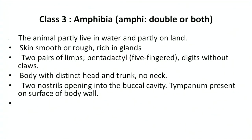The third class is Amphibia — 'amphi' means double or both, and 'bios' means life — as they live on land as well as in water, like frogs. The animals partly live in water and partly on land. Skin is smooth or sometimes rough and rich in glands. They have two pairs of limbs — pentadactyl, meaning five-fingered — with digits without claws.